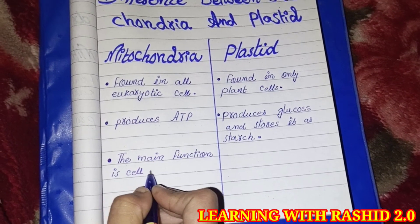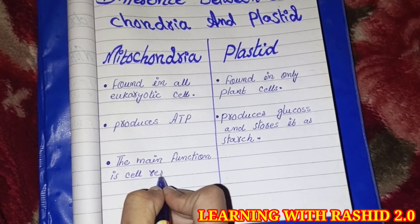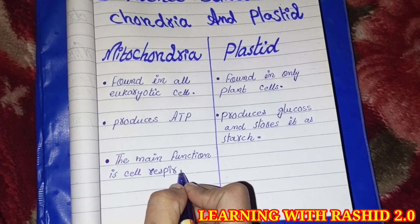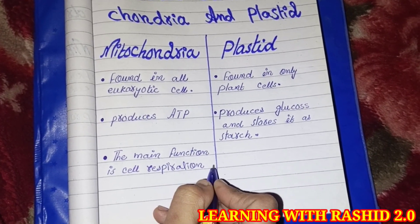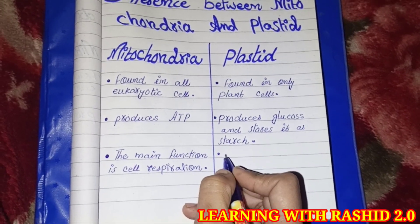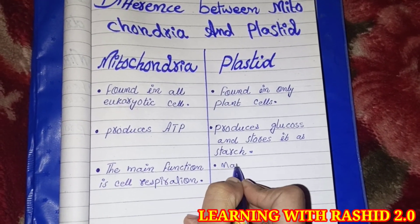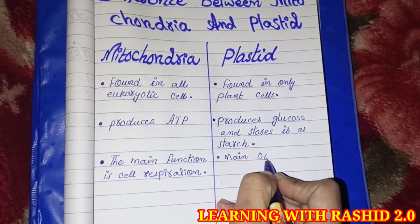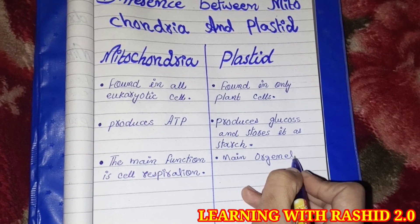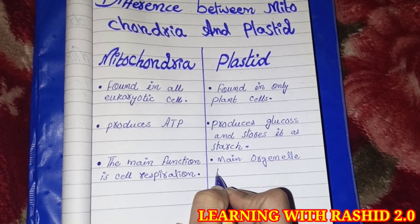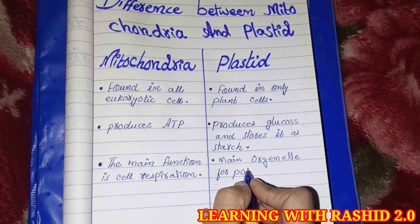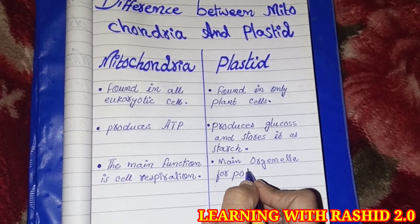Mitochondria is the organelle for cell respiration. Plastid is the organelle for photosynthesis.